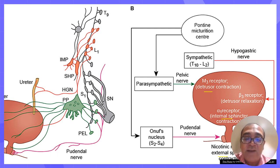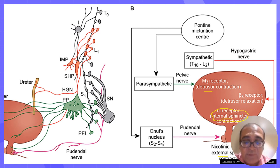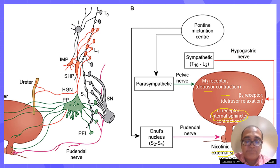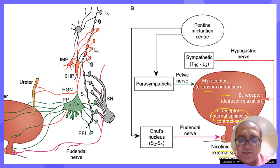When urine collects in the bladder, the degree of stretch is detected by the internal sphincter. When one voluntarily wants to empty the bladder, the external sphincter is relaxed. In addition, there is an area known as the trigone on the posterior wall of the bladder, which is made up of thick folds known as rugae.